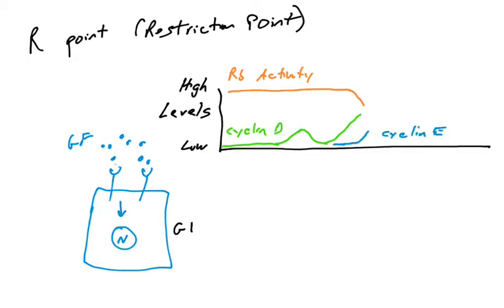This will allow the production of cyclin E protein. As you recall, RB can regulate the cyclin E gene. Cyclin E is produced and its levels increase. Cyclin E joins with CDK2 to phosphorylate and further decrease the activity of RB. This point in the cell cycle is what is known as the R point — when the cell has reached a high enough level of cyclin D and then cyclin E to phosphorylate enough RB to allow the positive feedback loop to kick in, producing cyclin E at a very high level and phosphorylating RB at a very high level.